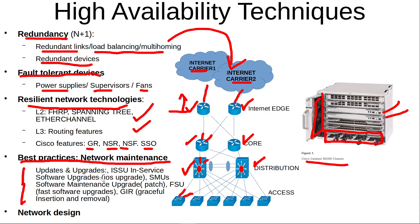For instance, the Cisco In-Service Software Upgrade (ISSU) lets you upgrade your operating system while the network is running. Software maintenance upgrades are patches. The Fast Software Upgrade feature lets you avoid disrupting user traffic during upgrades. The Graceful Insertion and Removal feature lets you put your Catalyst into maintenance mode, where it becomes isolated from network traffic so you can work on it. You must also follow a good network design.